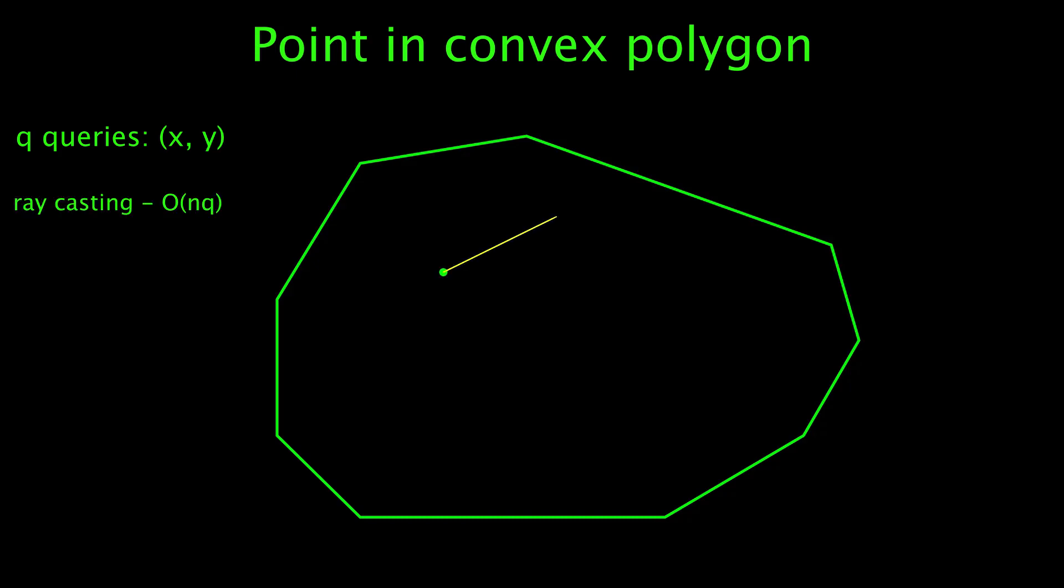Of course, we can use raycasting algorithm for each query, but that would be inefficient, as complexity would be O(nq), because for every query, we would go through all n sides of the polygon.